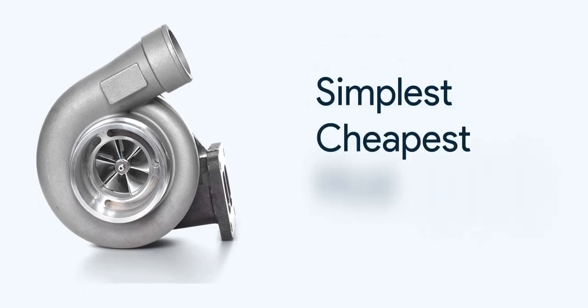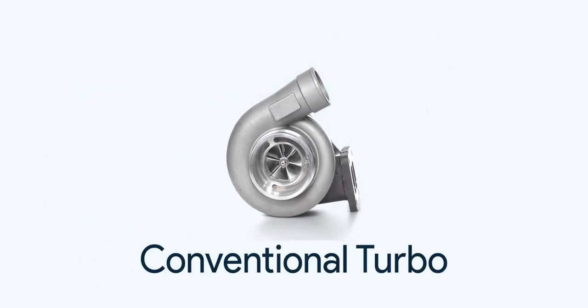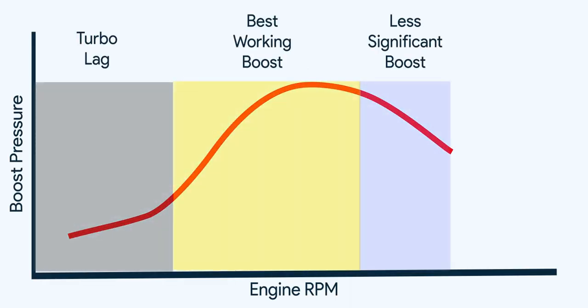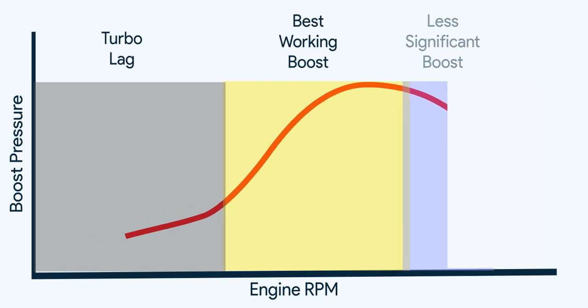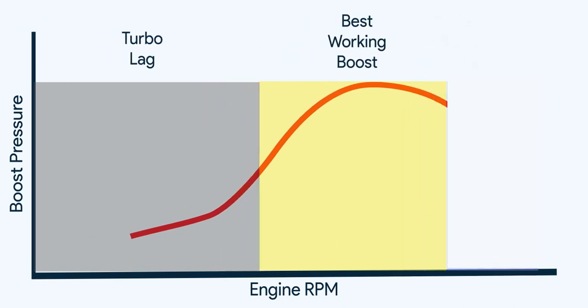The simplest, cheapest, and most common setup is using a single conventional turbo. It has a specific rev range in which it performs best. If it's meant for low rev range, then it doesn't help much at high RPM. And if it's used specifically for boosting power at high rev range, then it results in a lot of turbo lag. This type of turbo is mostly used in very economical cars. To solve the problem of narrow working rev range comes the role of VGT, meaning variable geometry turbo.